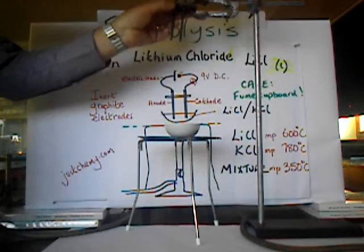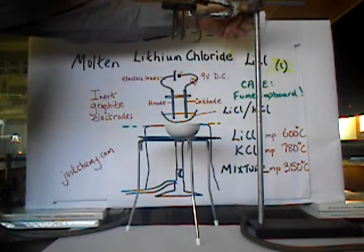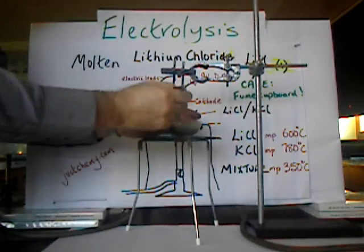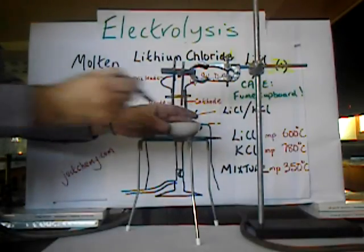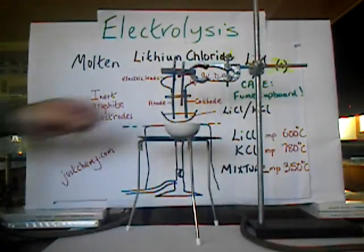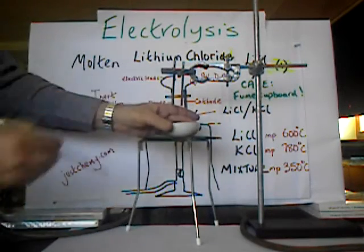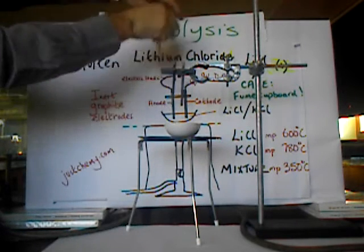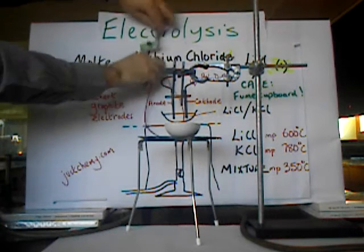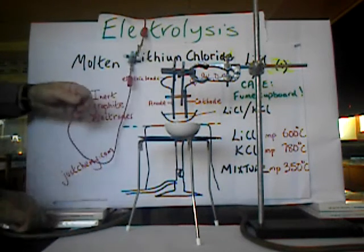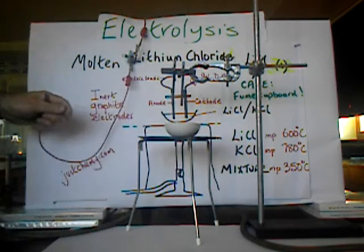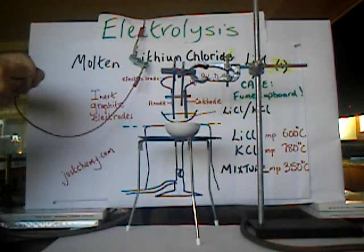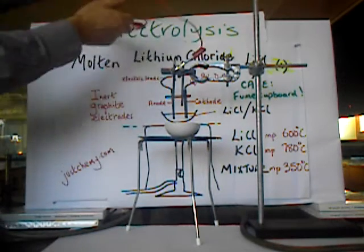I have a power pack set at 9 volts DC. We must use direct current. Can you think why? We want the electrode on the left to remain the anode and the electrode on the right to remain the cathode — we don't want the cathode and anode switching around. I've also placed a bulb in the circuit. I like to keep the anode on the left and the cathode on the right, just for consistency.